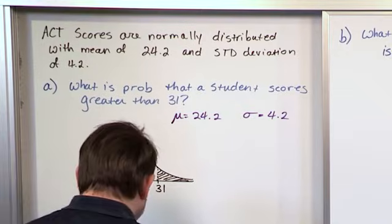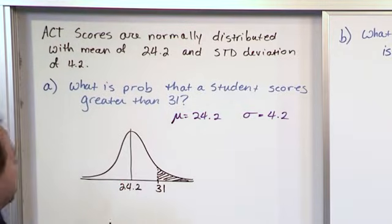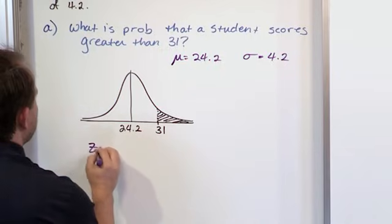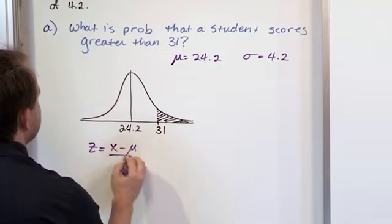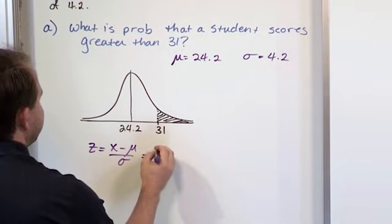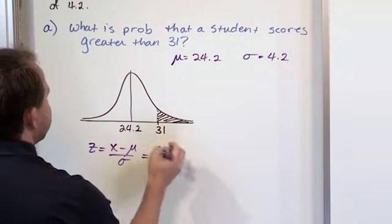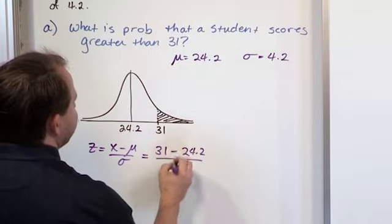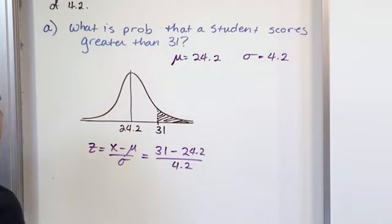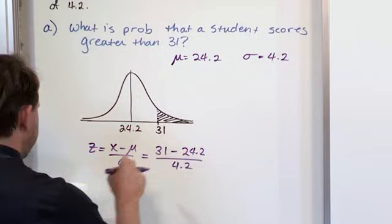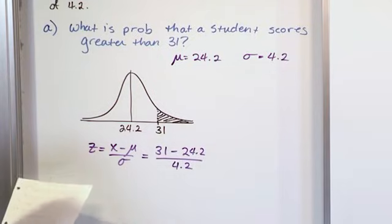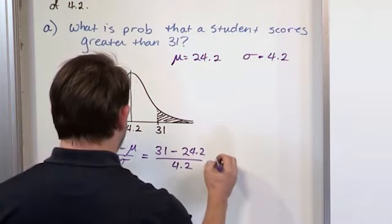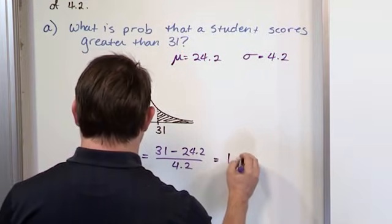Alright, so what we want to do is calculate the z-score of this value that we're interested in. The z-score is x minus mu, which is the mean, divided by the standard deviation. 31 minus the mean, 24.2, over the standard deviation, which is 4.2. And that gives us a z-score, when you do the subtraction and the division, of 1.62.